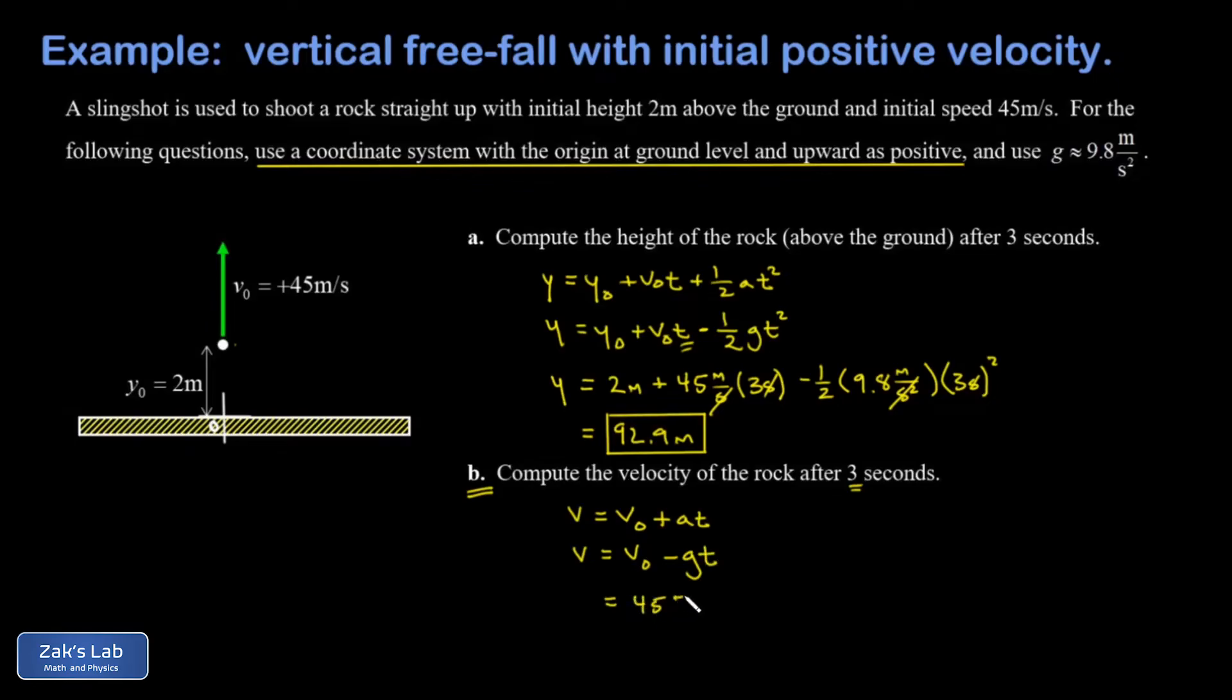And we plug in the numbers and I get 45 meters per second minus 9.8 meters per second squared times three seconds. Our units work out to meters per second on each term so that's good. And it turns out the rock is still headed upward, it has a velocity of positive 15.6 meters per second at this moment in time and we're done.